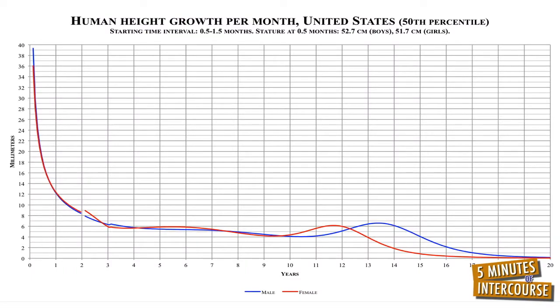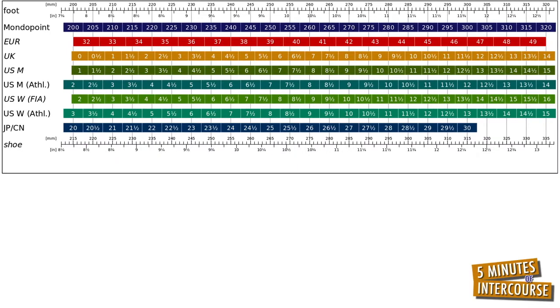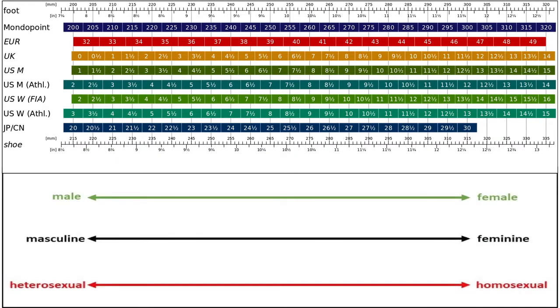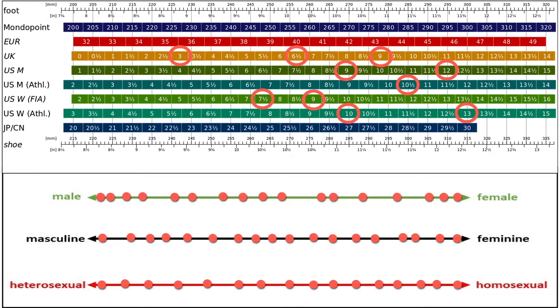Conclusion number three: sex, gender, and orientation vary on a continuum. Much the same way physical characteristics like height, weight, or your shoe size vary on continuums, so too do sex, gender, and orientation. And as ridiculous as it would be for there to be only 2, 3, 5, or even 10 different shoe sizes, so too would it be ridiculous for there to be only 2, 5, 9, 17, or even 50 different sexes, genders, or orientations.